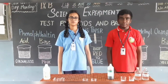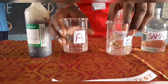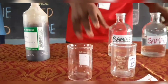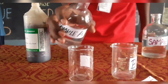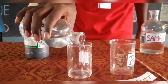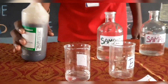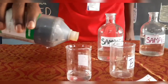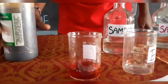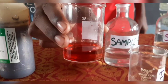Next, we are going to do the methyl orange test. Take two beakers A and B. In beaker A, take 30 ml of test solution. Add a few drops of methyl orange. The solution turns pink in color. This indicates the presence of acid.